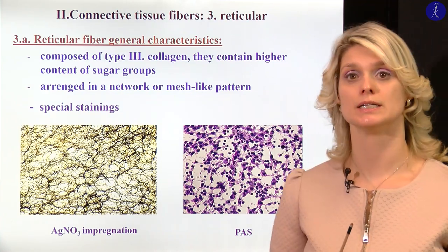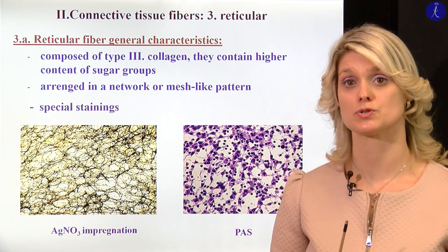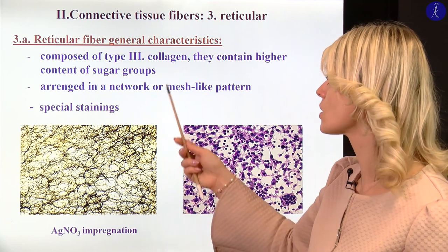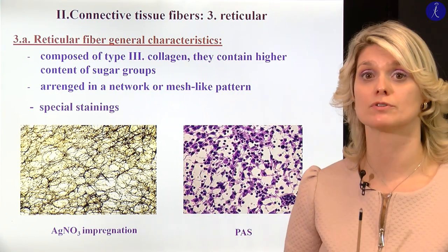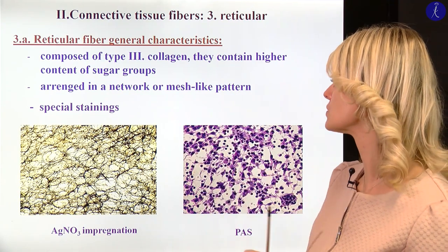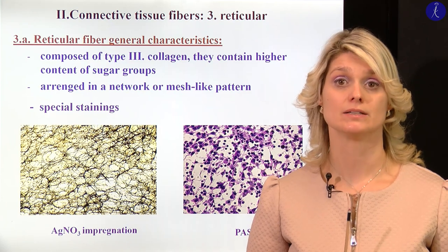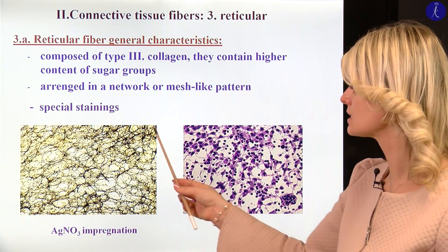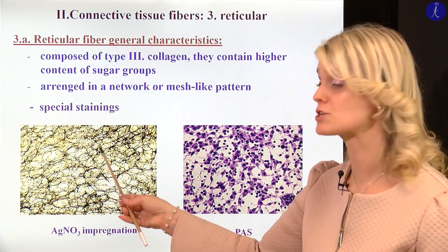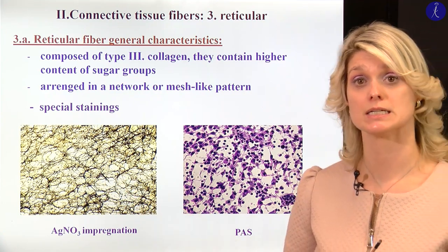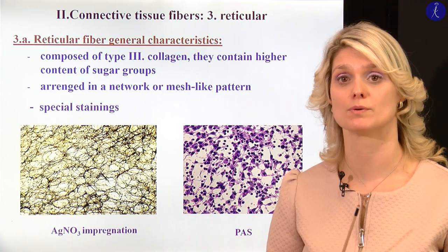Now I would like to turn to the reticular fibers — the third type of connective tissue fibers. We know very well that reticular fibers consist of type 3 collagen fibers. We have a very large amount of carbohydrate groups attached to these fibers, and because of the sugar groups, the special staining of the reticular fiber is the PAS. The other special staining is silver nitrate. You can see very clearly how the reticular fibers form this meshwork. This picture is from the liver, and you can see how these fibers form a network between the cells of the parenchymal organs.